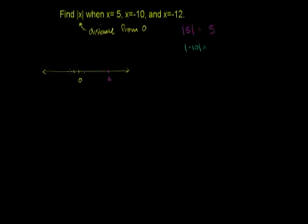And so let's just go negative 1, negative 2, negative 3, negative 4, negative 5, negative 6, negative 7, negative 8, negative 9, negative 10. I should extend the number line more. So this right here is negative 10.